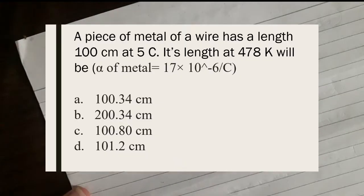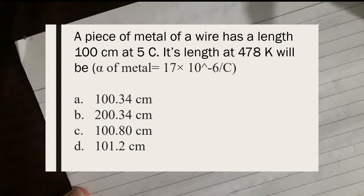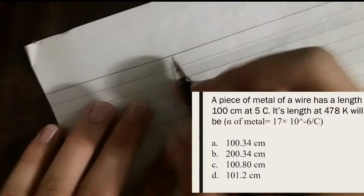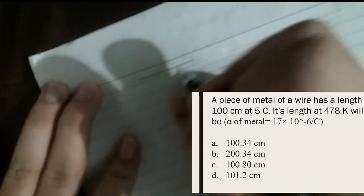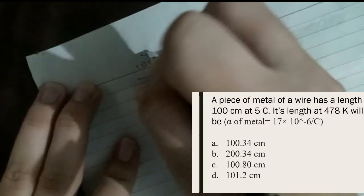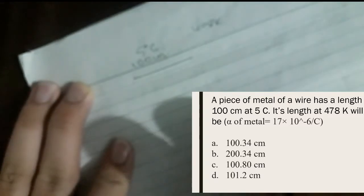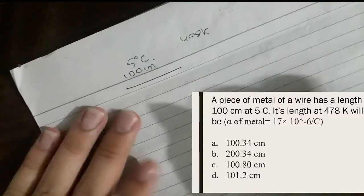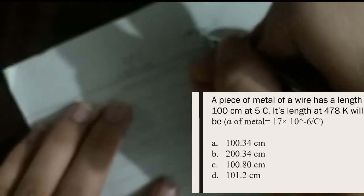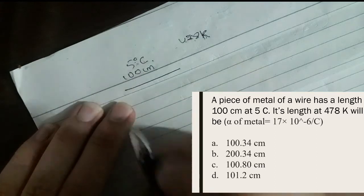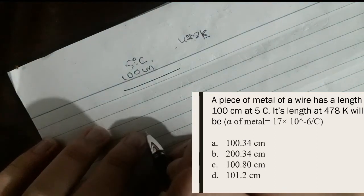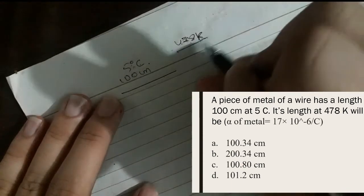Question 1: A piece of metal has a length of 100 cm at 5 degrees Celsius. The coefficient of linear expansion alpha is 17 × 10⁻⁶ per degree Celsius. The temperature is raised to 205 degrees Celsius. You need to find the new length in centimeters.